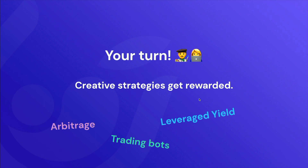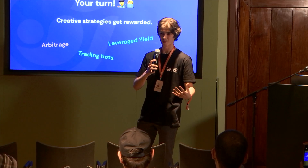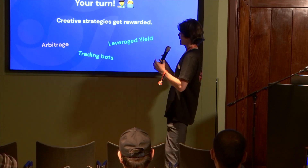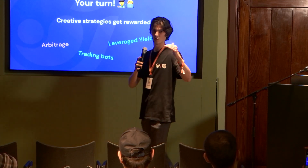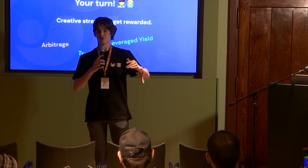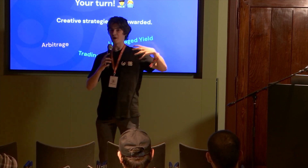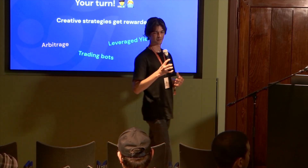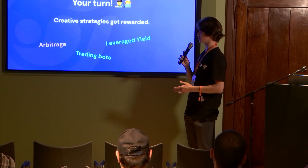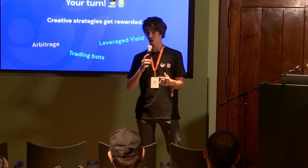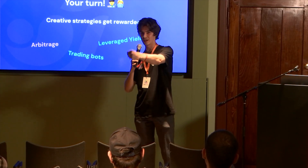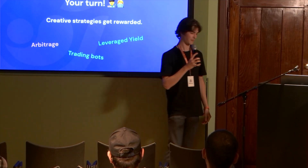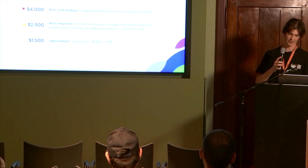Now it's your turn. Creative strategies always get rewarded, whether through arbitrage, natural economic rewards, just like you're seeing on Uniswap, or anything else. For example, if the APY is very low on APWine and the APY is very high on the platform itself, you'd better buy yield because you know it's going to go up. You can also build trading bots, leverage yield — sell your yield in advance and then reinvest it. It can get pretty crazy.